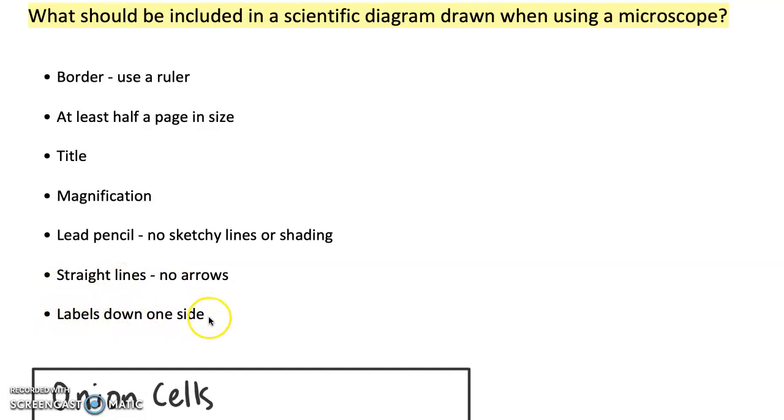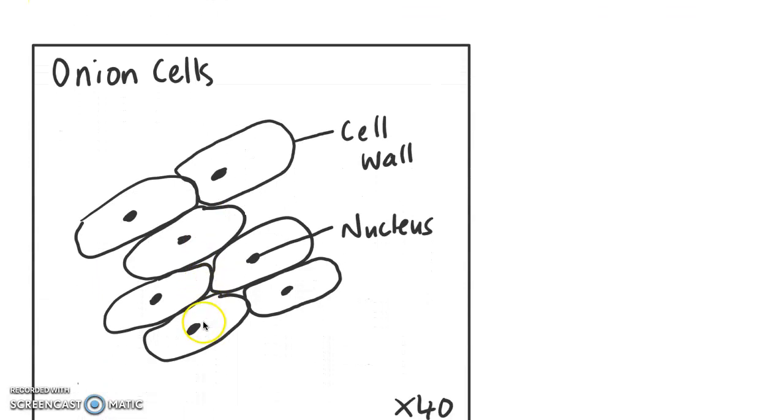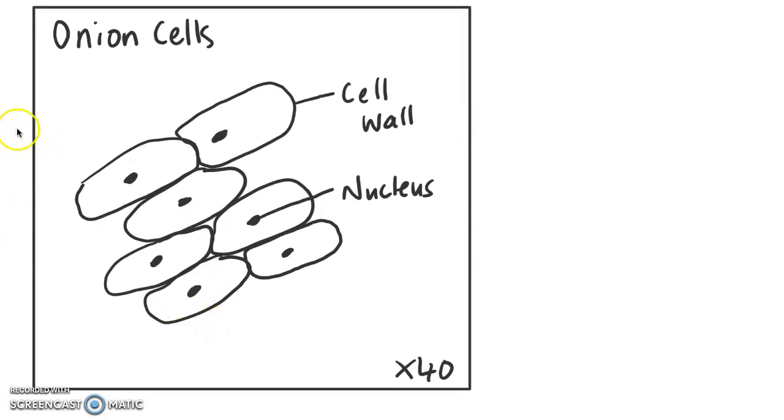Here's an example. Obviously it's not in pencil because I drew it on the computer, but you can see here I was looking at some onion cells under a slide. I've got my border, a title, I've got my magnification really clear. There's no coloring in, no sketching, and I just have straight lines to what I am labeling, and the labels are down one side.